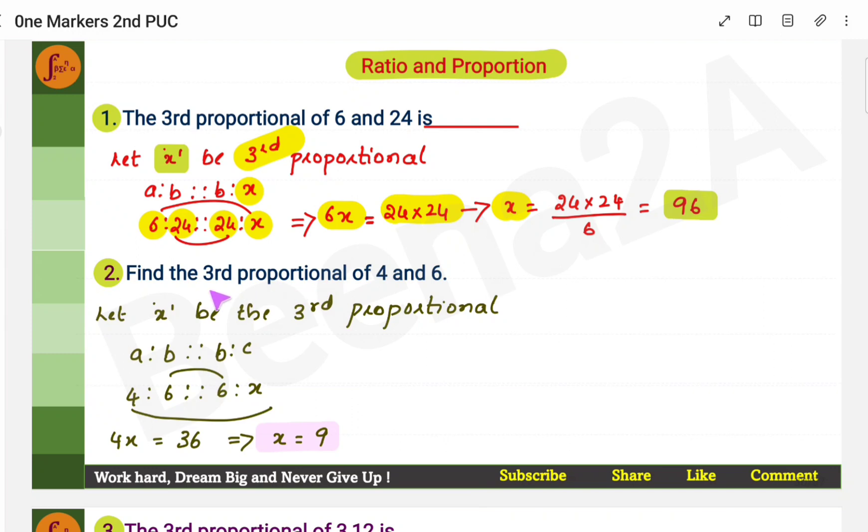Similarly, another example, find the third proportional of 4 and 6. So 4 is to 6, 6 is to x. The fourth term is what you have to find. Don't confuse, third proportional doesn't mean third term, third proportional means fourth term. Again, multiply the extremes and equate it to the middle terms. So 4x is 6 into 6, which is 36, therefore x is 9.